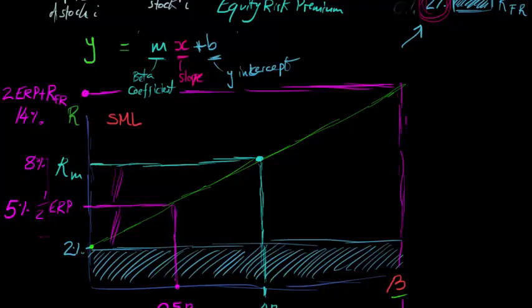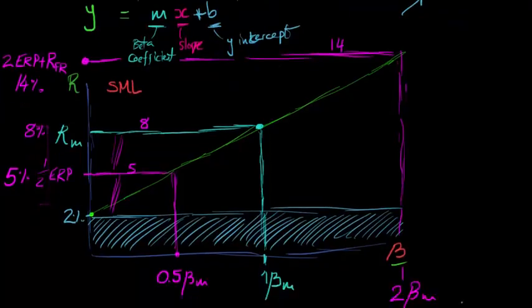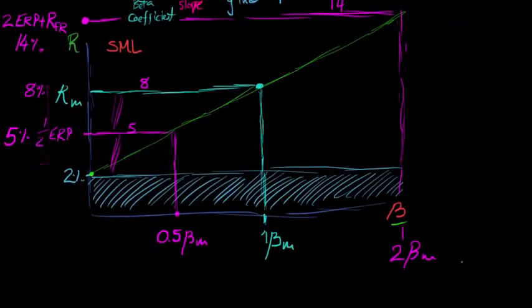This would be 5%, this would be 8%, and this would be 14%. This is called the security market line, or the SML, and it's basically a graphical representation of the CAPM multiplied by the beta of asset I.